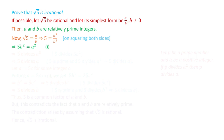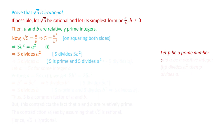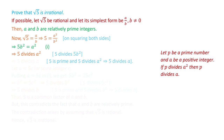Now, if 5b squared equals a squared, it means 5 divides a squared. Since 5 is a prime number and 5 divides a squared, using our lemma — if p is a prime number and a is a positive integer, and p divides a squared, then p divides a — we obtain that 5 divides a.